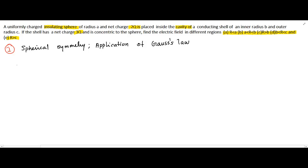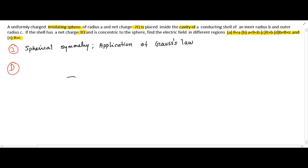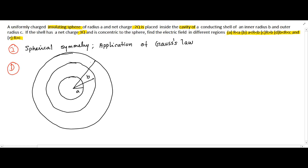We have a uniformly charged solid sphere of radius a, concentric to a spherical metallic shell of inner radius b and outer radius c. The net charge of minus 2q is uniformly distributed in the sphere. The shell's net charge of 3q will reside at the surface as it is a conducting one.